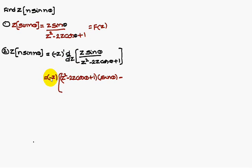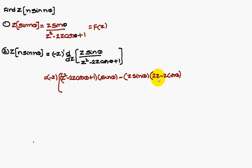So: minus Z into [(Z² − 2Z·cosθ + 1) times differentiation of numerator sinθ minus Z·sinθ times differentiation of denominator (2Z − 2cosθ)] divided by denominator whole squared. This is the way to solve multiplication with n problems in Z-transform. Thank you.